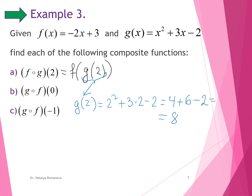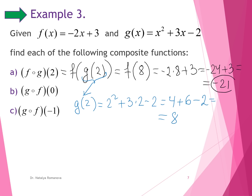Now we find f of 8 — the value of function f at x equals 8. That gives us negative 2 times 8 plus 3, which equals negative 16 plus 3, equals negative 13. Wait — negative 24 plus 3 equals negative 21. So the answer for example 1 is negative 21.